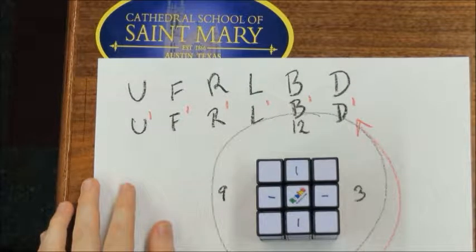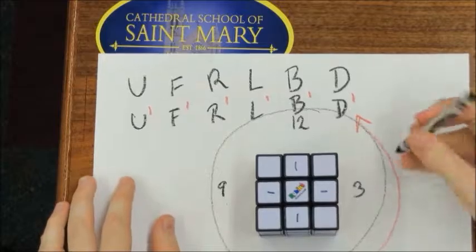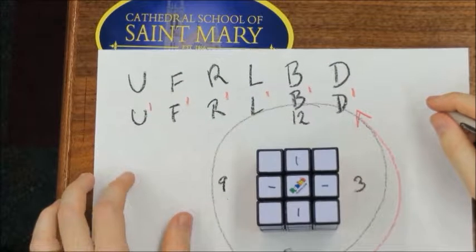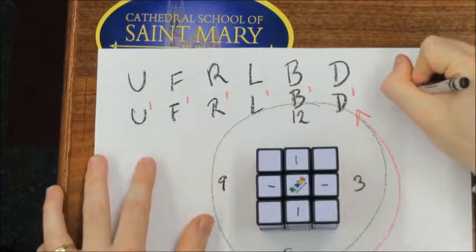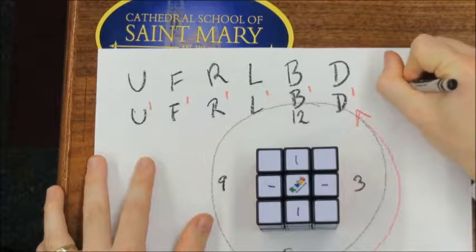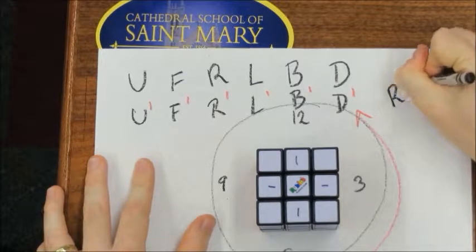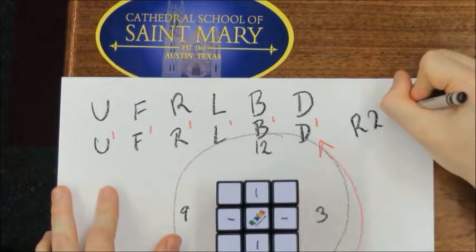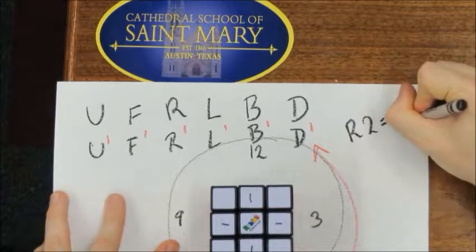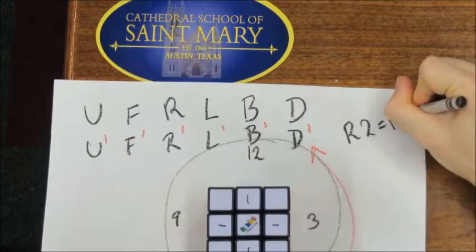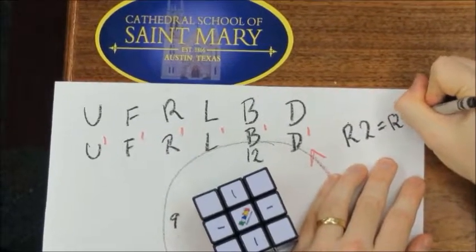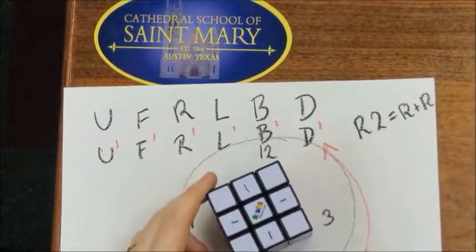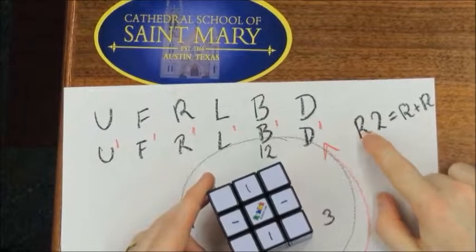The last thing before we get started is to learn one more thing about letters. Sometimes I'm going to write a number next to the letter. A number means to perform that move that many times — so R2 means to do right twice.